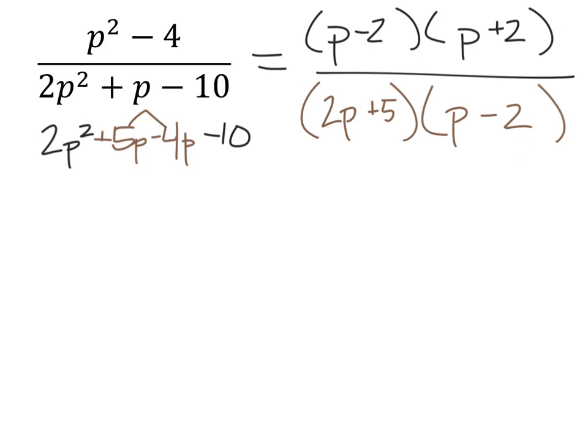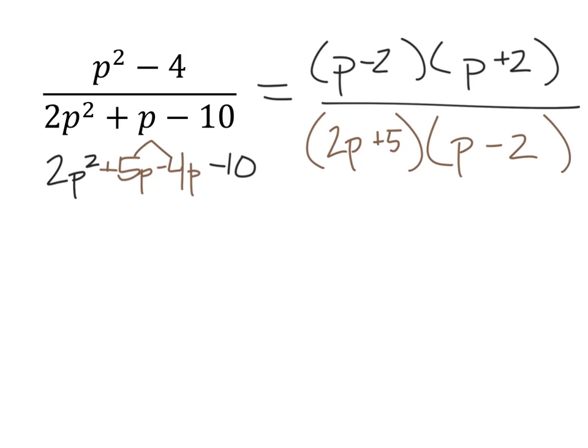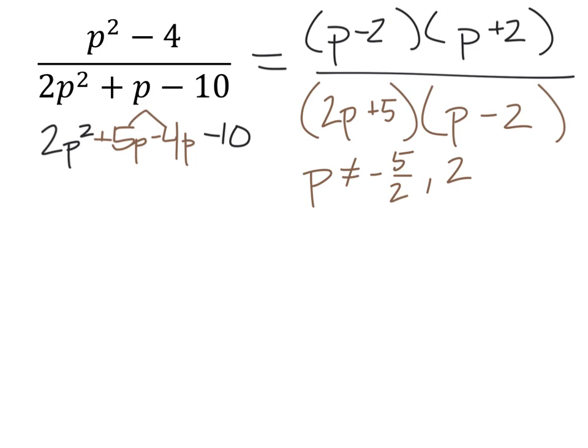Now, after solving these, we would find that p cannot equal negative five halves or 2. Again, I do that just by simply making these two terms equal to zero, and then solving for p. So I do that twice, and I'd find that p is not negative five halves or 2.